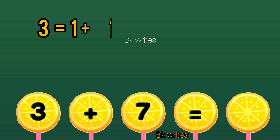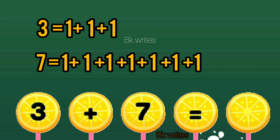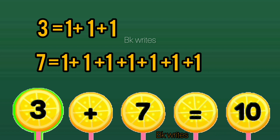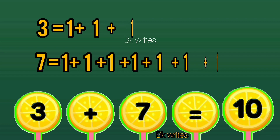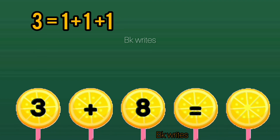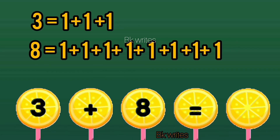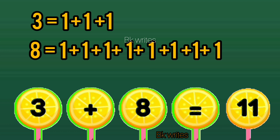3 plus 7 is equal to 10. 3 plus 7 is equal to 10. 3 plus 7 is equal to 10. 3 plus 8 is equal to 11.